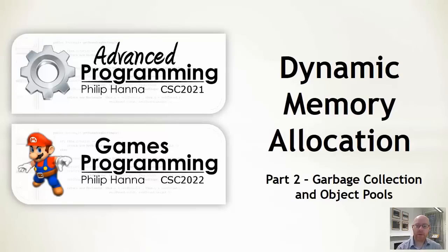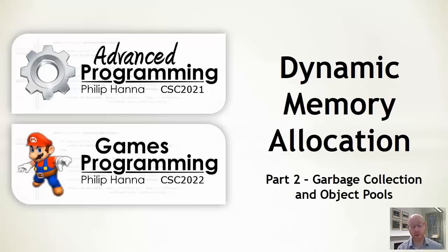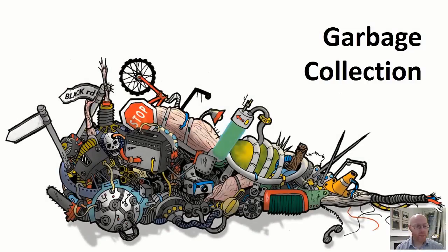The second part of our dynamic memory allocation lecture is concerned with a few aspects: looking at garbage collection and a short bit on object pools. So we'll start off first of all with garbage collection.